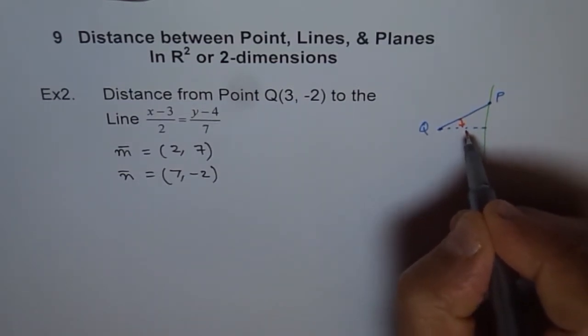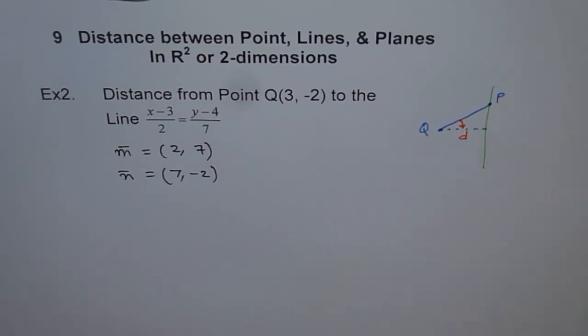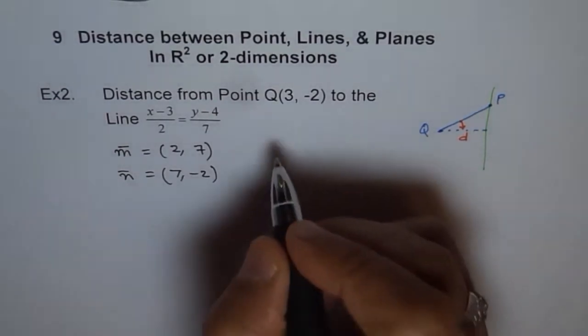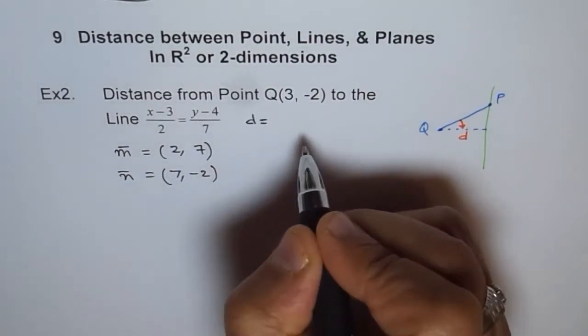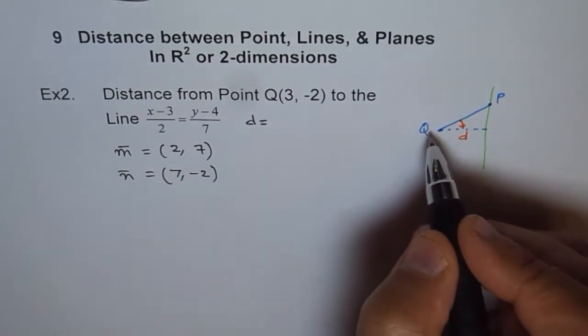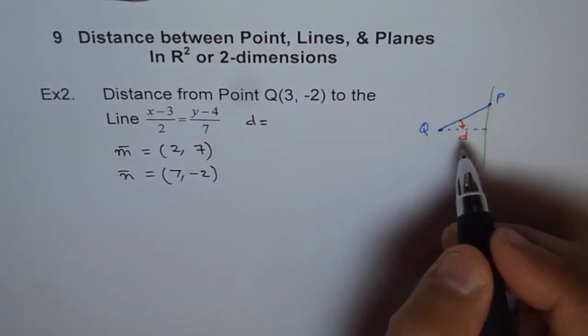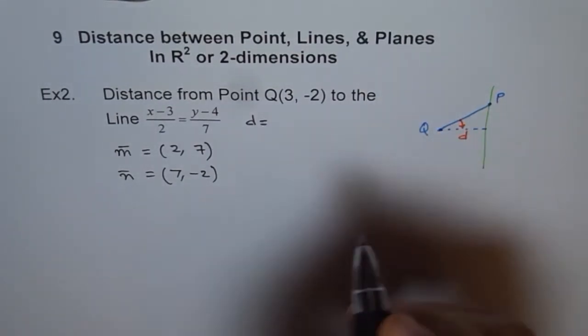So this is the vector projection of QP on this line. And that distance D is the shortest distance which we are interested in. And therefore, the formula for shortest distance is projection of QP along the normal. That becomes the normal.